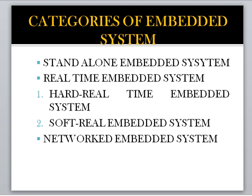Embedded systems can also be classified by scale. A small-scale embedded system is supported by a single 8- to 16-bit microprocessor or microcontroller with on-chip RAM and ROM, designed to perform simple tasks. A medium-scale embedded system is supported by a 16- to 32-bit microprocessor or microcontroller with external RAM and ROM, and can perform more complex operations. A large-scale networked embedded system is supported by 32-bit or 64-bit multiple chips and can conduct distributed jobs.